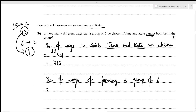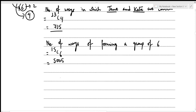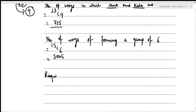The total ways to form a group of six from 15 without restriction is 15C6 = 5005. The required number of ways where Jane and Kate cannot both be in the group is 5005 − 715 = 4290.